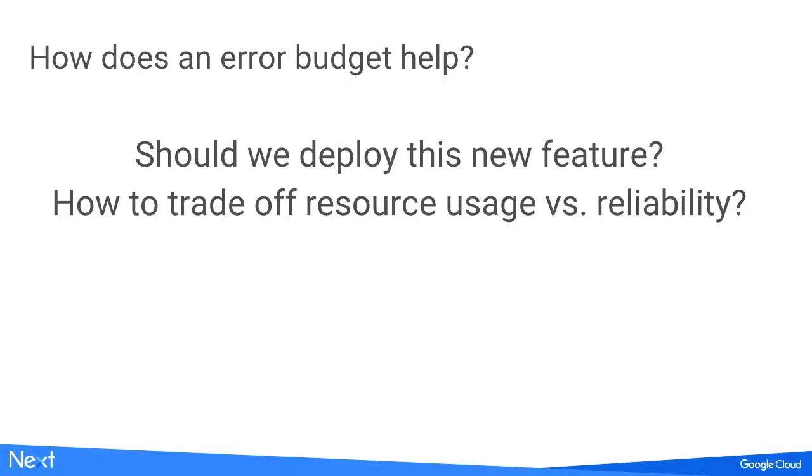How should we trade off resource usage versus reliability? You can over-provision your service to make it more reliable, but that adds cost. Is that a worthwhile investment, or can you run a little hotter? The answer is in your error budgets. If you're consuming all of your error budget, you probably don't want to run any hotter. If you're not consuming all of it, maybe you should consider running your service a little hotter.